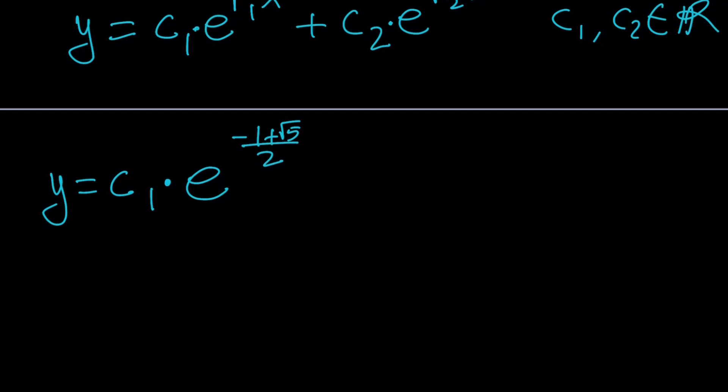But this is going to be c1 times e to the power negative 1 plus root 5 over 2. Remember, this was our first r value multiplied by x plus c2, which is our second constant, multiplied by e to the power negative 1 minus root 5 all over 2 multiplied by x again.